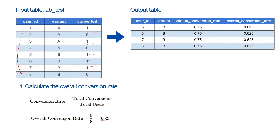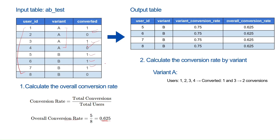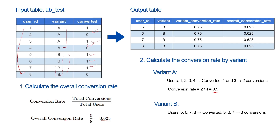Now let's calculate the conversion rate per variant. For variant A, there are 4 users (1, 2, 3, 4), of which users 1 and 3 converted — so 2 conversions out of 4 users, giving a conversion rate of 2/4 = 0.5. For variant B, users are 5, 6, 7, and 8, and users 5, 6, and 7 converted — 3 conversions out of 4 users, giving a conversion rate of 3/4 = 0.75.